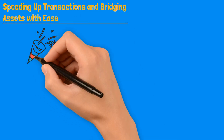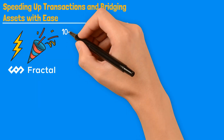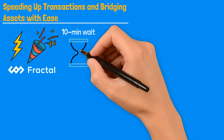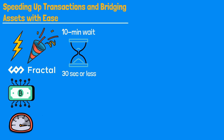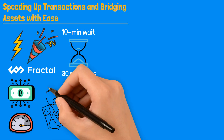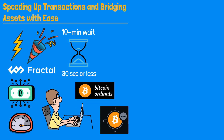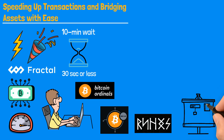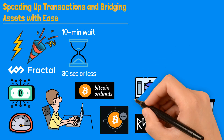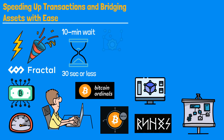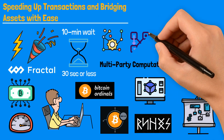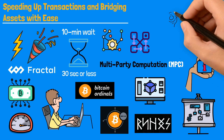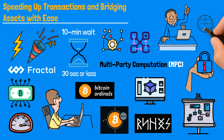Speeding up transactions and bridging assets with ease. Fractal Bitcoin is here to turbocharge your transactions. Say goodbye to the usual 10-minute wait for block confirmations because Fractal Bitcoin whips that down to just 30 seconds or less. That means your transactions are flying through, making everything feel snappy and responsive — a game-changer for high-frequency applications and users tired of chain congestion with BRC20 tokens, ordinals, and runes. Fractal Bitcoin also brings a fantastic asset bridging feature: you can easily transfer digital assets like BRC20 tokens and runes across different layers thanks to a rotating multi-party computation (MPC) signature system, allowing assets to glide smoothly from one layer to another without wrapping them.